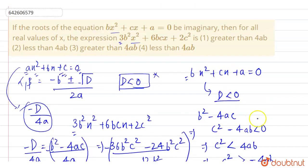So let us match the options. Greater than 4ab? No, this is wrong. Less than 4ab? This is wrong. Greater than minus 4ab? Yeah, this is correct.